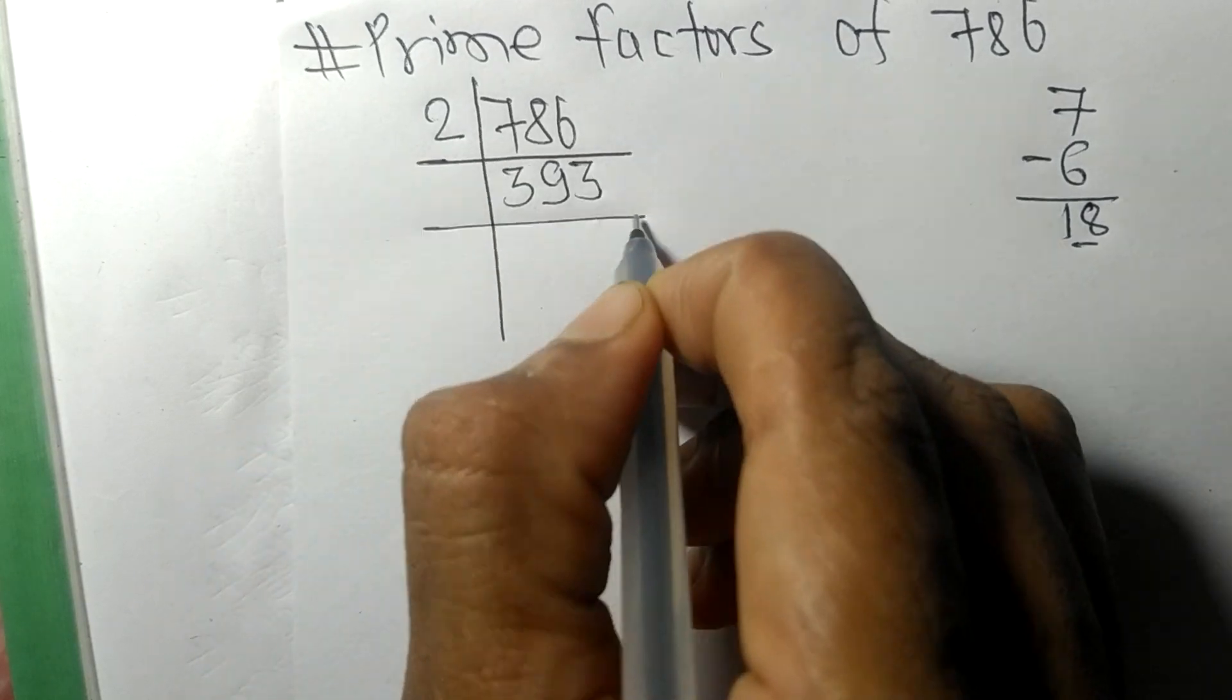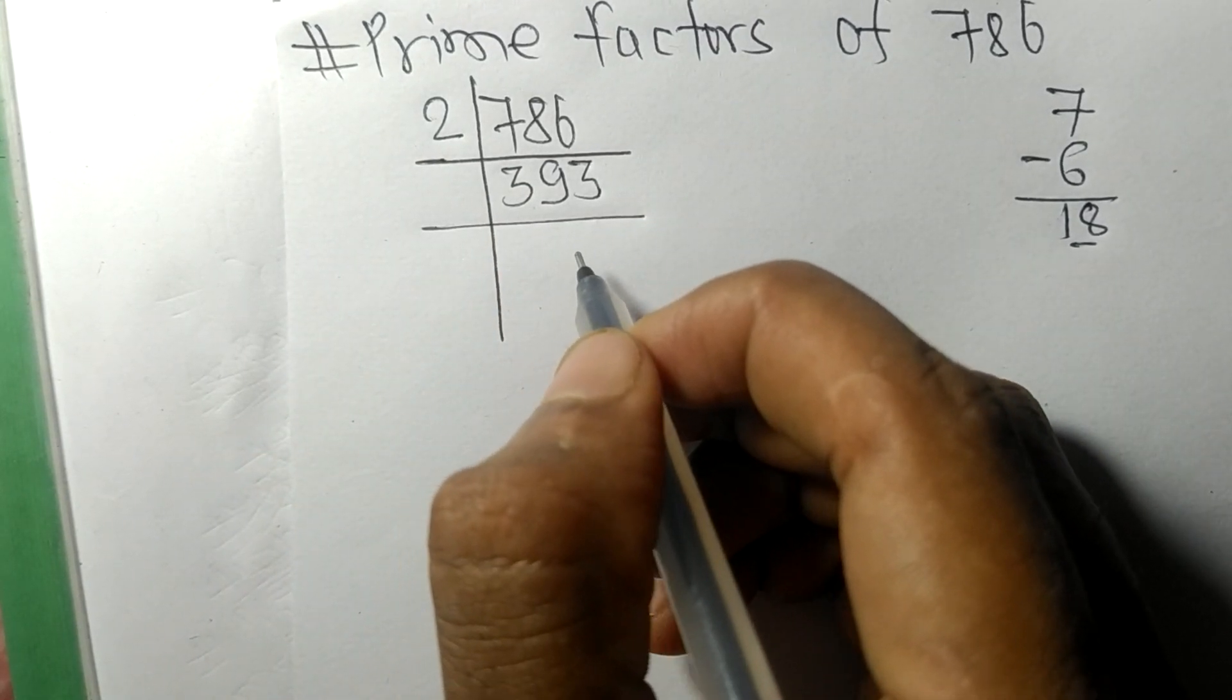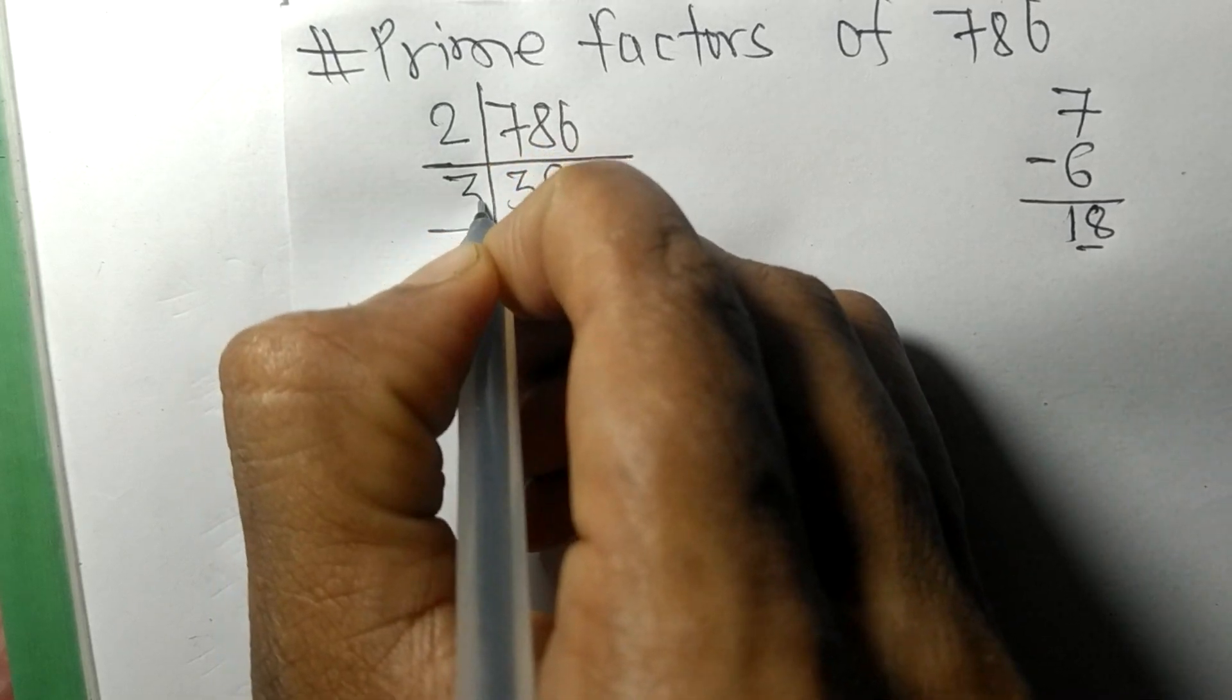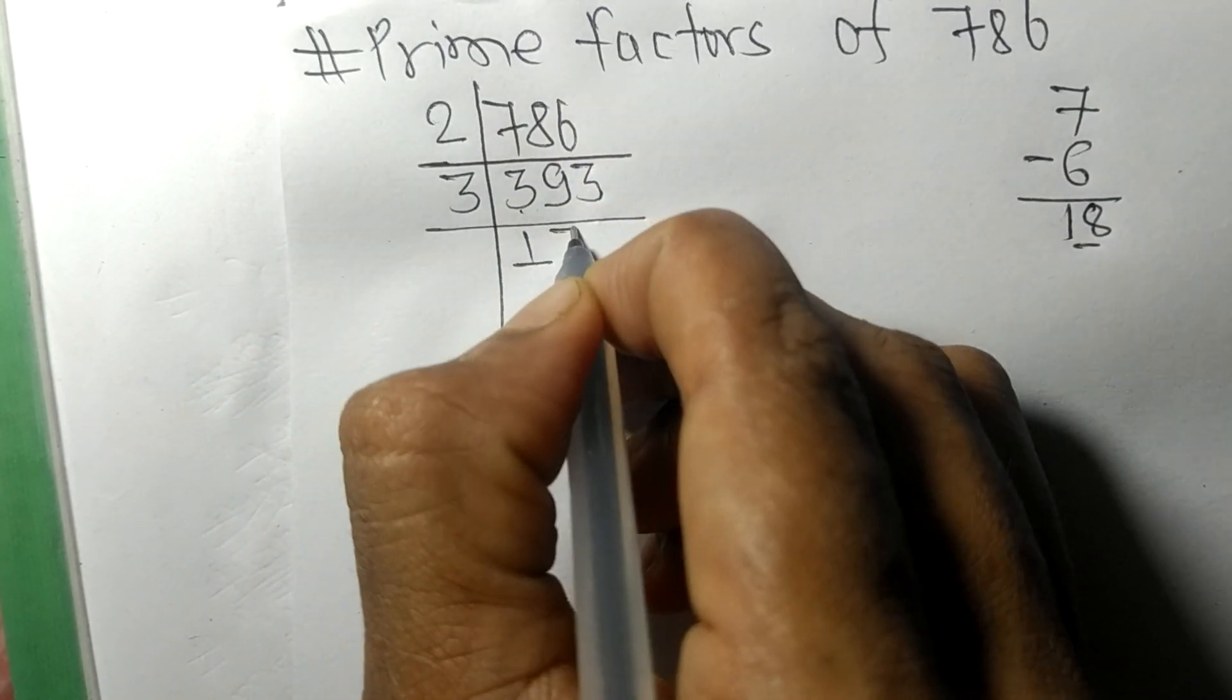6. So now we got 393, which is exactly divisible by 3. 3 times 1 is 3, 3 times 3 means